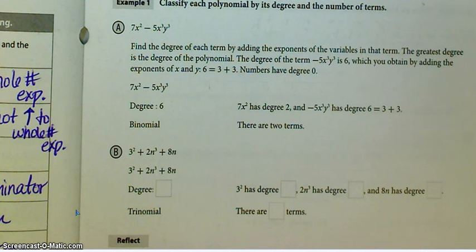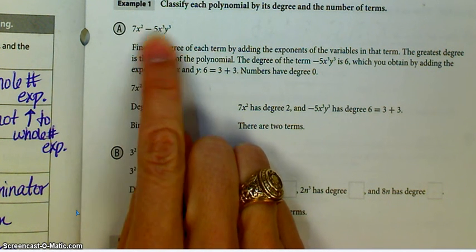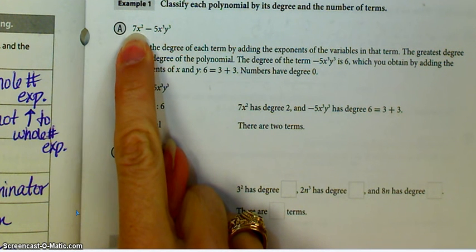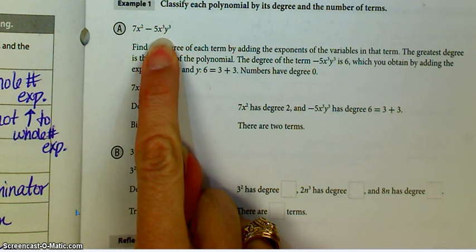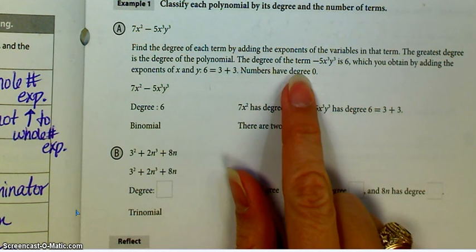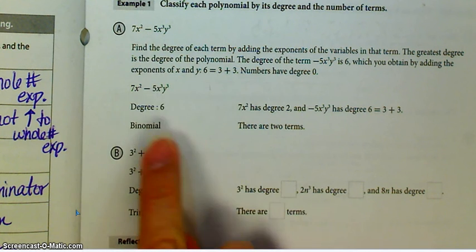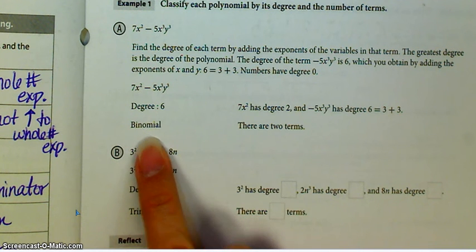I'm now on page 675. You have 7x² minus 5x³y³. Find the degree of each term. You have two terms: 7x² and negative 5x³y³. For 7x², there's only x raised to the second power, so this is a second degree term. For negative 5x³y³, x is to the third and y is to the third: 3 + 3 = 6, so this is a 6th degree term. Numbers have a degree of 0. This polynomial has a degree of 6 and it's a binomial, because there are two terms.